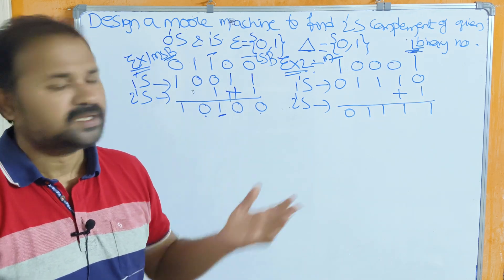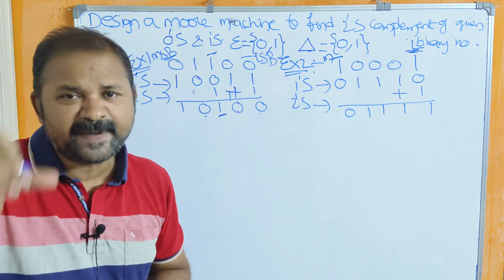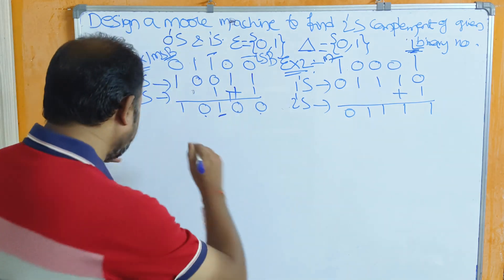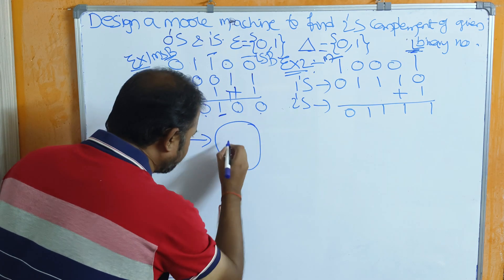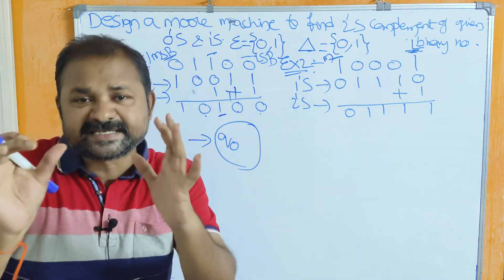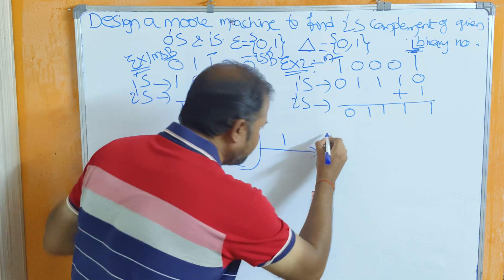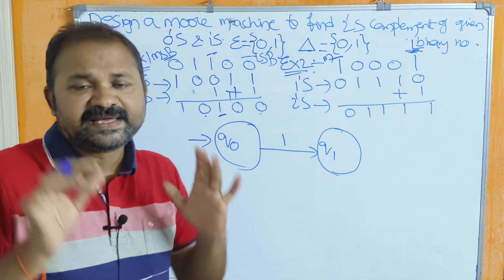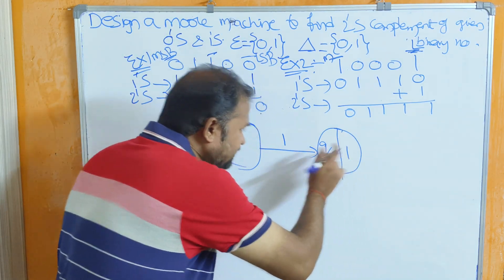For this we have to design the Moore machine. A Moore machine means the output depends only on the present state, so inside the state we write the output. Let the starting state be q0. The logic up to the first 1 is: keep bits the same. So in q0, if the input is 1, go to the next state q1, and since the input is 1, the output is also 1.